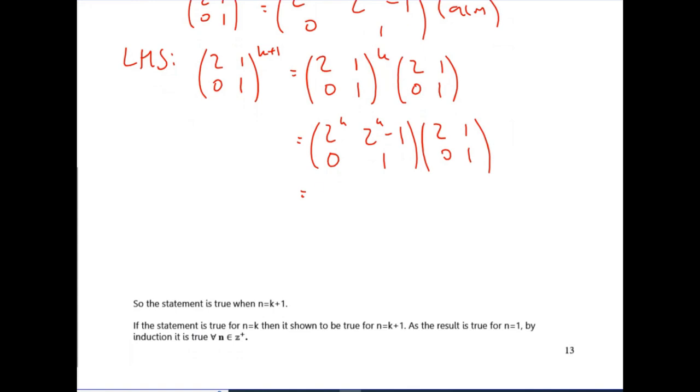So do the top row times the first column. So you get 2 to the k times 2 plus 0. Then the top row times the second column gives you 2 to the k plus 2 to the k minus 1. The bottom row times the first column gives you 0, so 0 times 2 and 1 times 0 is 0. And the bottom row times the last column gives you 1, because you've got 0 times 1 plus 1.